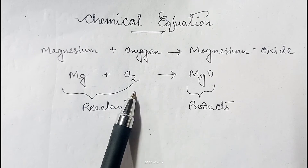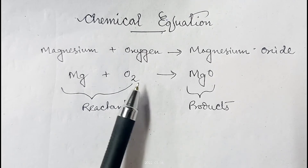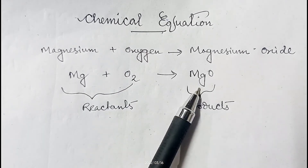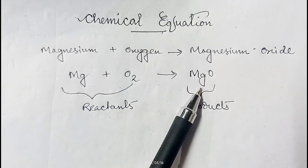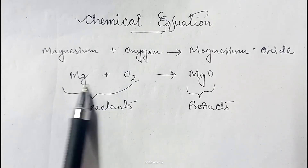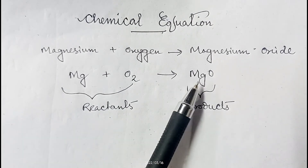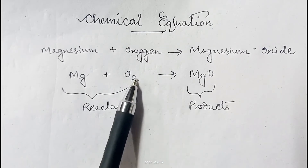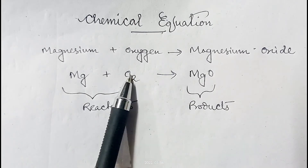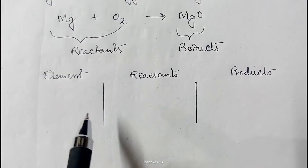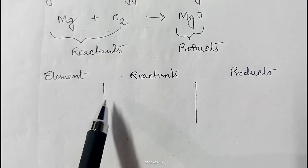To make the equation more meaningful, we have to balance it — that means we must make the number of atoms on the reactant side and the product side the same. If there is one atom on one side, there must be one on the other; if there are two oxygen atoms on one side, the other side must also have two.